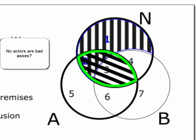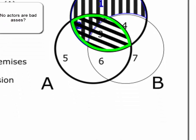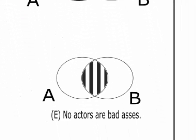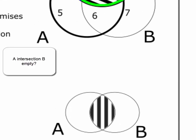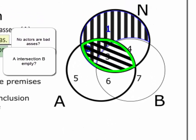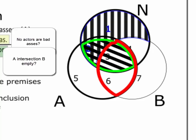So we ask, does this diagram force the conclusion to be true? The conclusion is that no actors are badasses. So in terms of the diagram, we're looking to see if the intersection of actors and badasses is forced to be empty. That is, regions 3 and 6. Is that area, which I'm now outlining, forced to be empty?